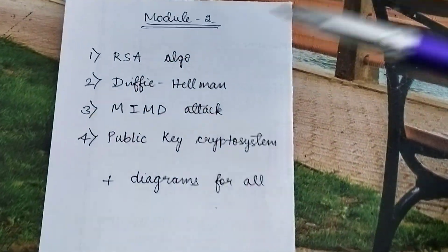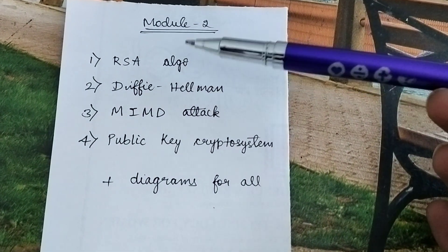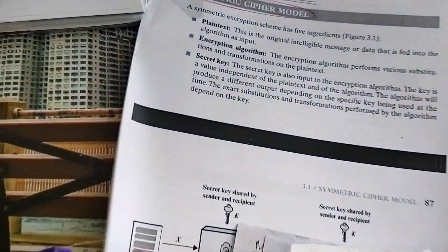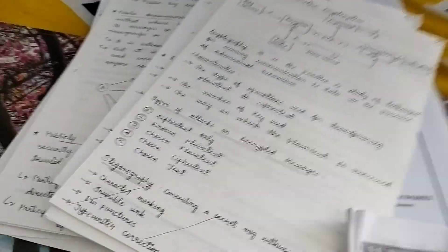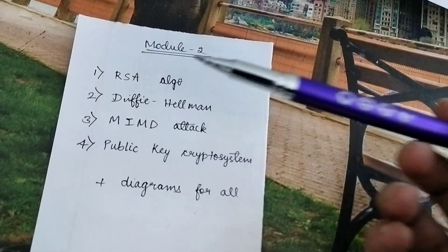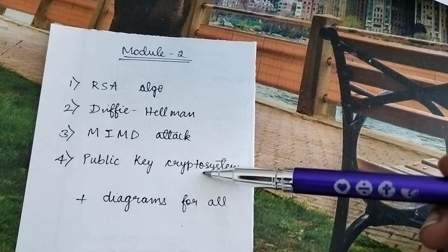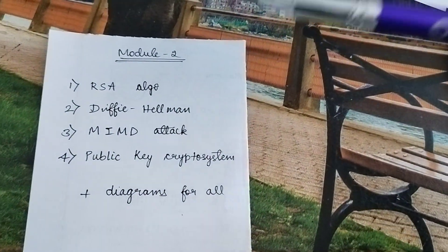For the second module: RSA algorithm with two diagrams of it. I have not mentioned the solutions for the RSA algorithm in the PDF I sent you — I've written all that in the written notes, which I'll put in the drive. Second question is Hellman and MIMD attack, and public key cryptosystems. Don't miss a single question.